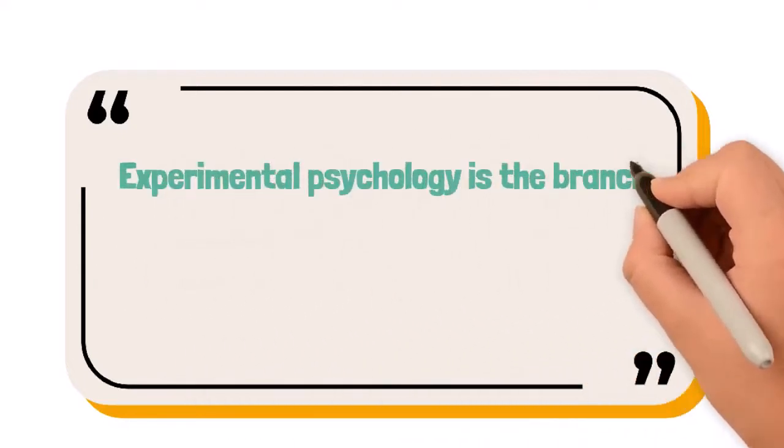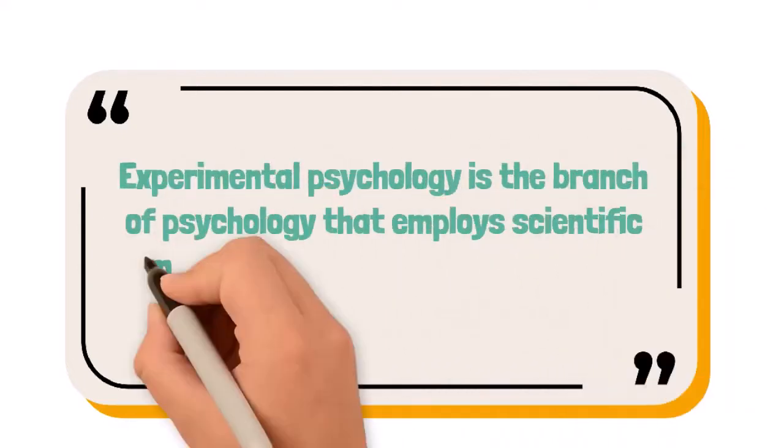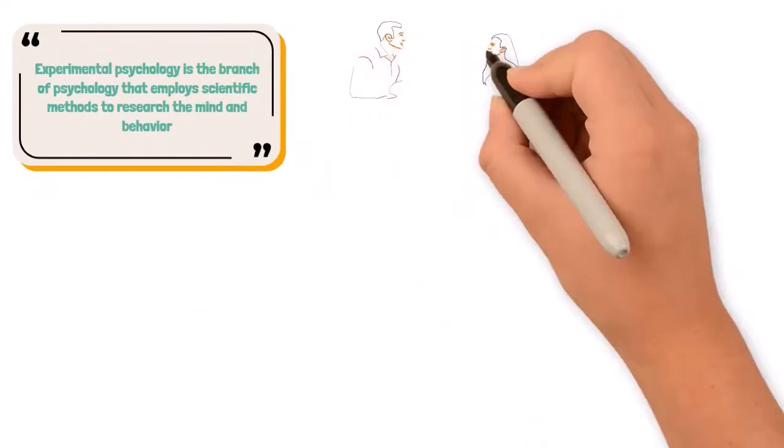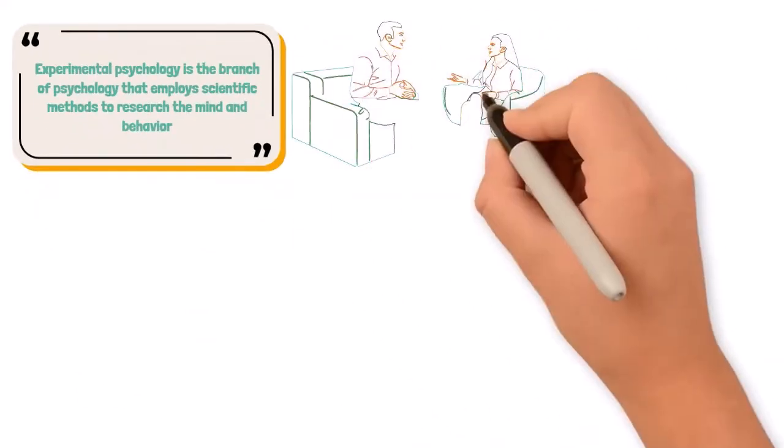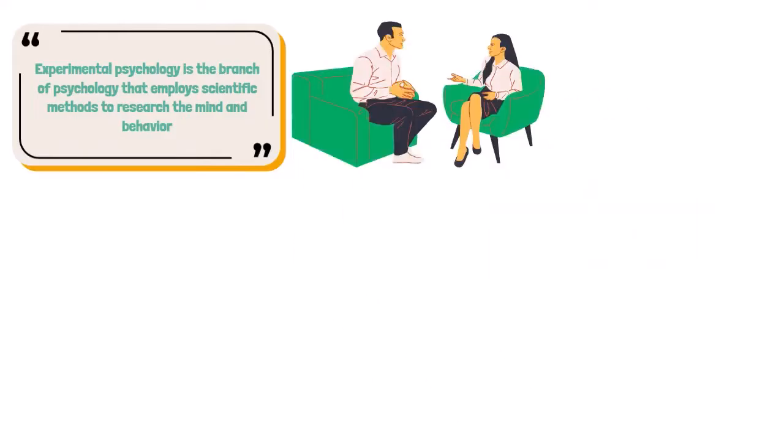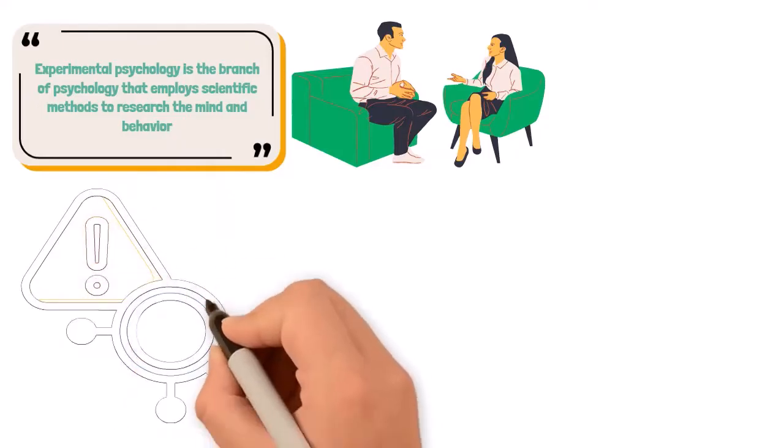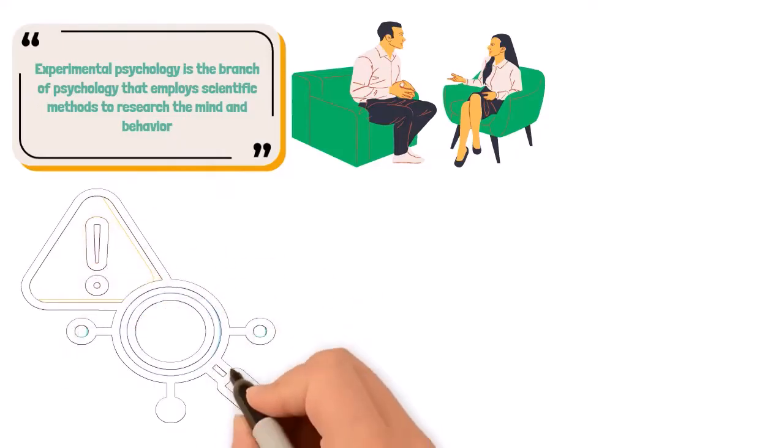Experimental psychology is the branch of psychology that employs scientific methods to research the mind and behavior. It uses controlled experiments to explore how people think, feel, and act. By manipulating variables and observing outcomes, experimental psychologists aim to establish cause and effect relationships in human behavior.